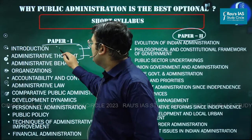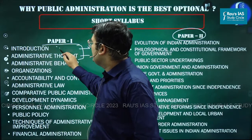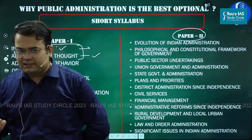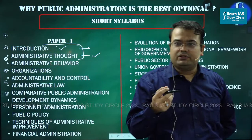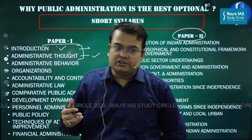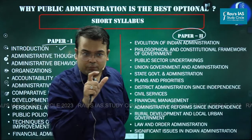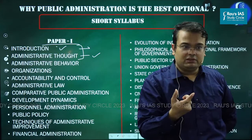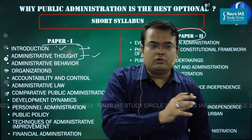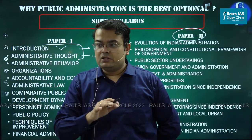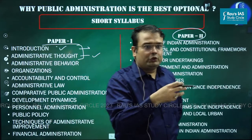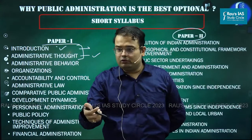The first two units are about introduction to public administration and administrative thinkers. In the introduction, you need to study the meaning of public administration, the scope, and what exactly studying public administration is about. In humanities, unlike physical sciences, there isn't only one answer — it's a matter of different perspectives. One school of thought believes public administration must be about understanding only the executive.